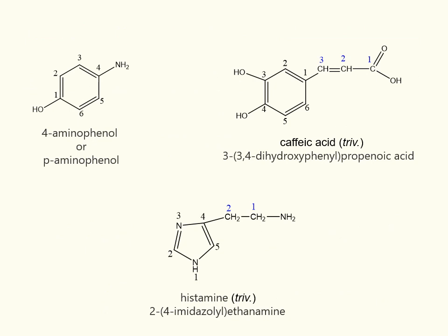The following compounds contain aromatic rings. The heterofunctional compound might be named as either a substituted phenol or a substituted aniline. The former should be taken as the parent name due to the priority of phenol. Thus, the correct name is 4-aminophenol.